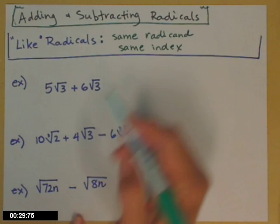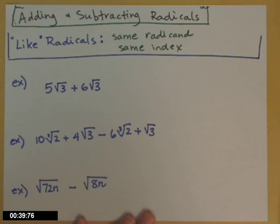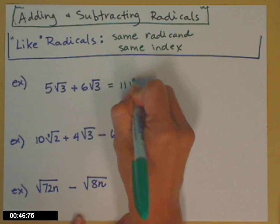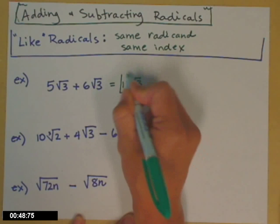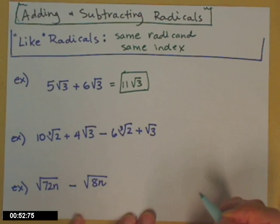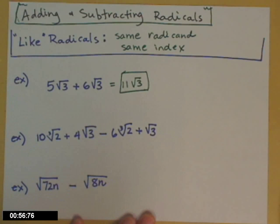I have three examples to go through. The first one is 5 times the square root of 3 plus 6 times the square root of 3. And if you say it, it kind of sounds like what you need to do — it's very intuitive. 5 square roots of 3 plus 6 square roots of 3 equals 11 square roots of 3. You can sort of treat those 5s and 6s — the numbers out front — like coefficients. I have 5 of them, I'm going to add 6 more, altogether I have 11.